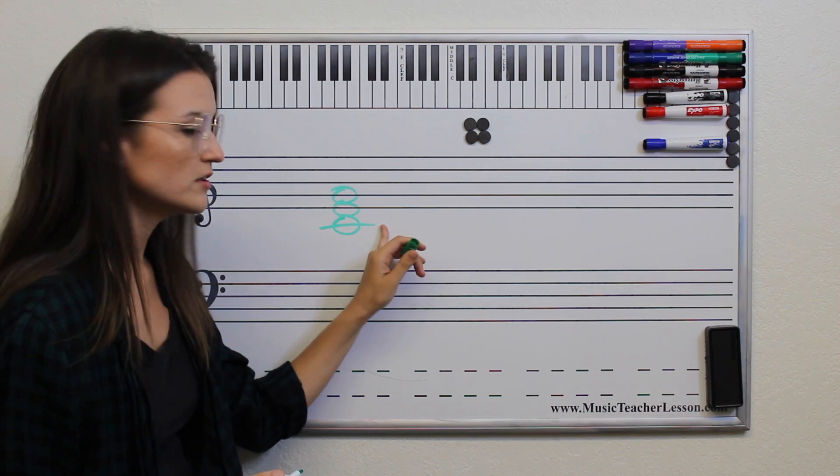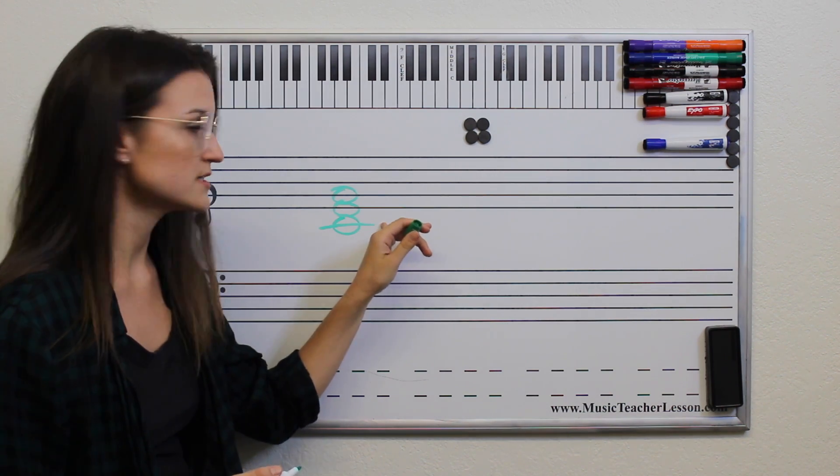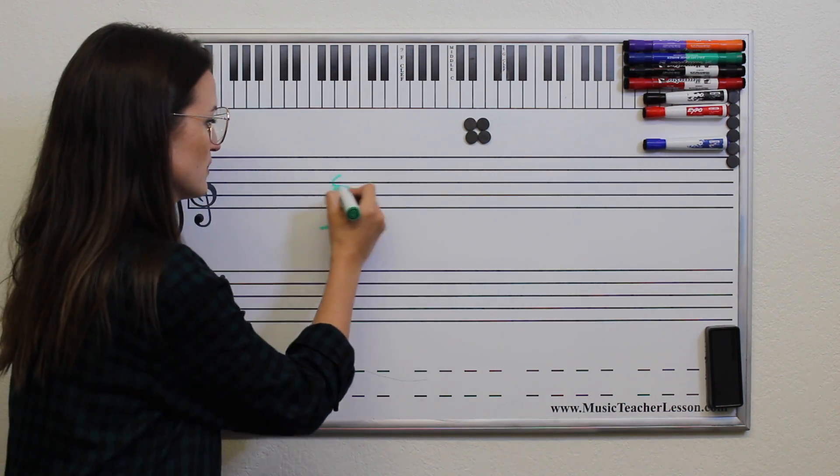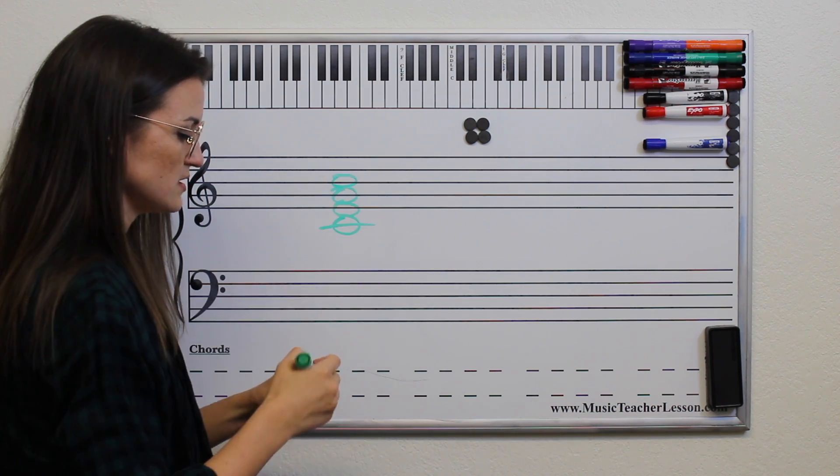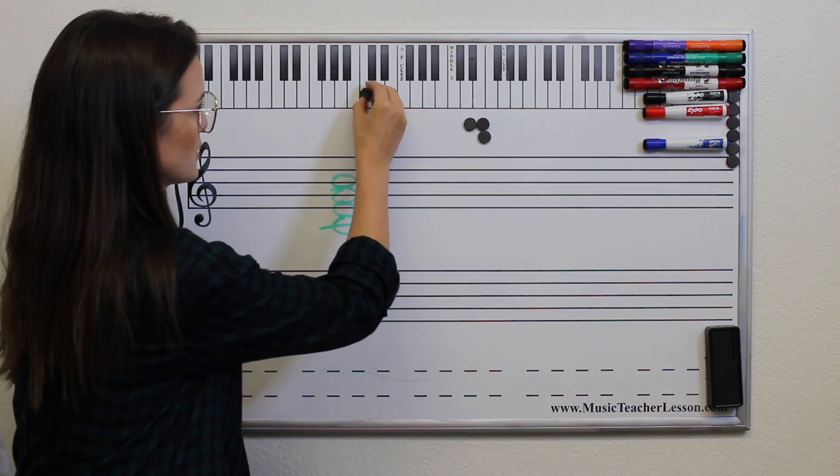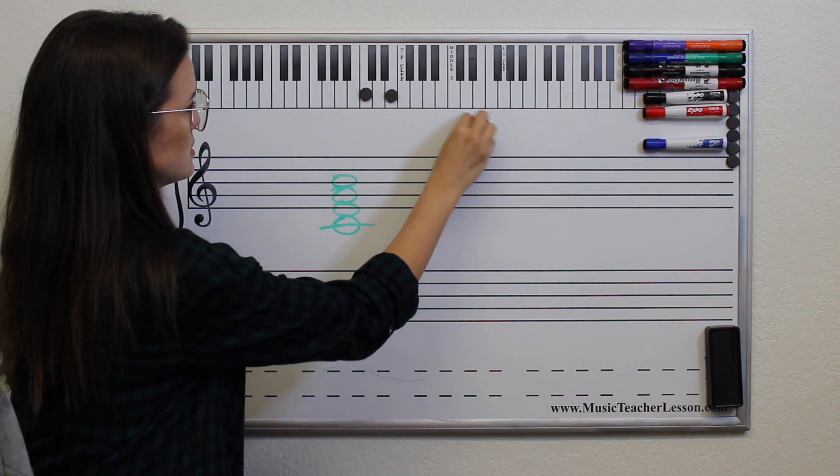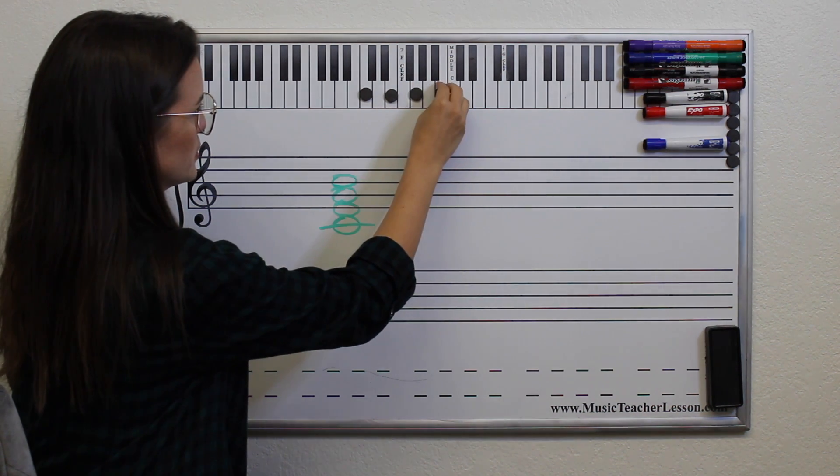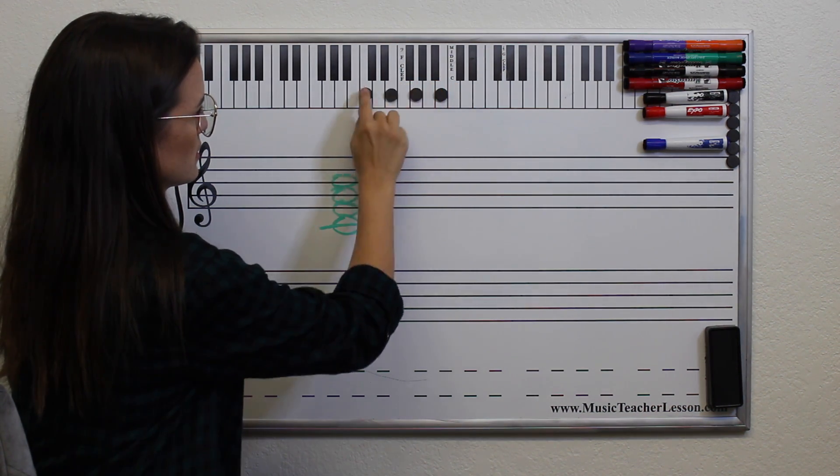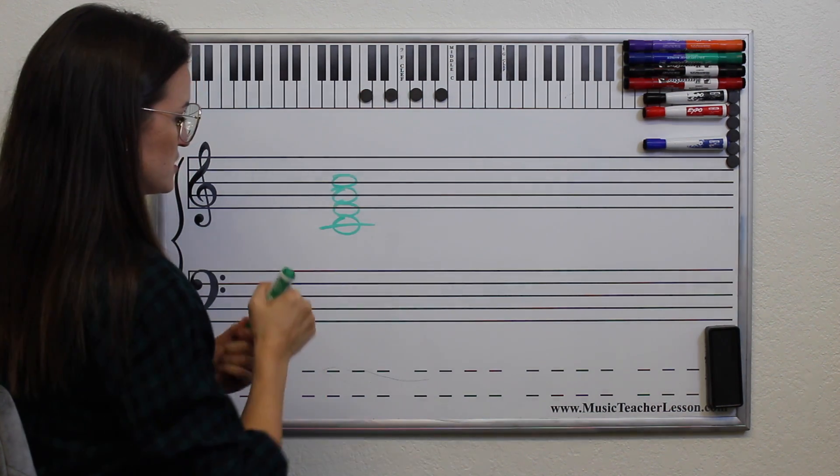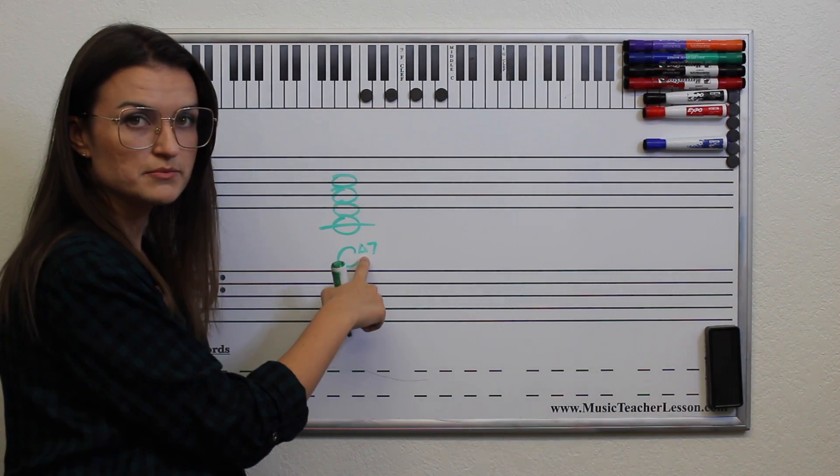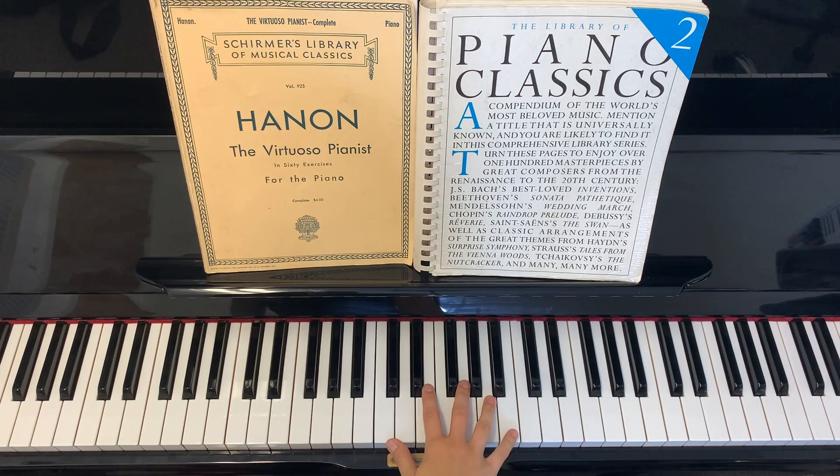And whatever the 7th note of the C major scale is, we're going to add it up here to get a B natural. C, E, G, B. So that's your C major 7th chord. The triangle means it's a major 7th. Here's C major 7th.